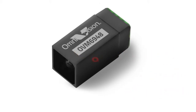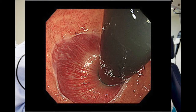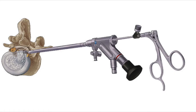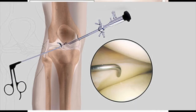With this camera's small size and high 200 by 200 — a total of 40,000 pixel — backside illuminated resolution, high-quality images can be captured from within the body's narrowest blood vessels for neuro, ophthalmic, ENT, cardiac, spinal, urology, gynecology, and arthroscopy procedures.